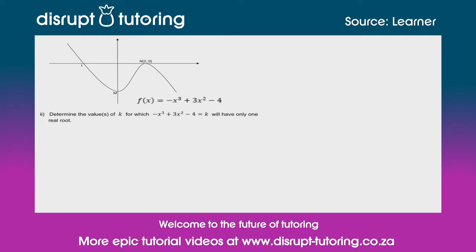It's a cubic function and they've also given us the equation: f(x) = -x³ + 3x² - 4. They've said to us for two marks, now bear in mind two marks which means there isn't a lot of working out that is required. Determine the values of k for which -x³ + 3x² - 4 = k will have only one real root.